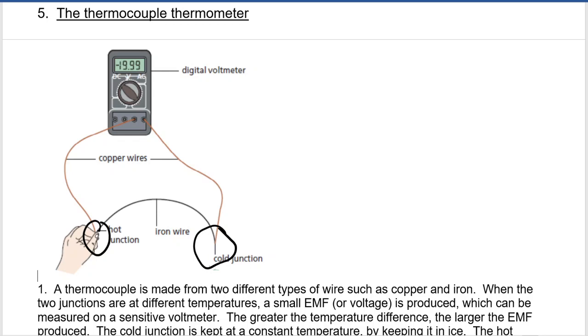So at first, when we have both junctions in ice, we must register a zero millivolt display on the digital voltmeter. And then as this difference increases, you start having an increase also in the millivolt display, which means this display is proportional to the change in temperatures. So the cold junction is always kept in ice, but the hot junction is used as a probe.